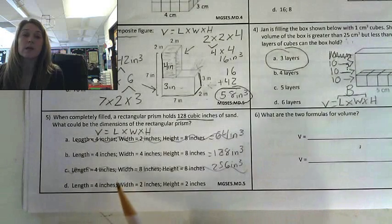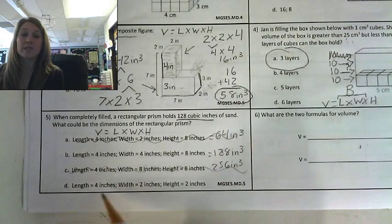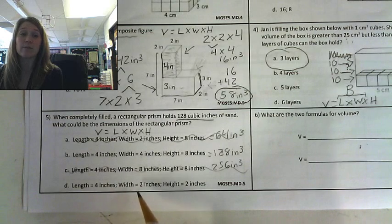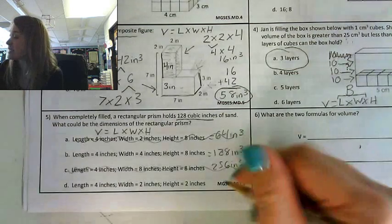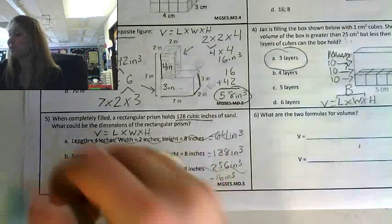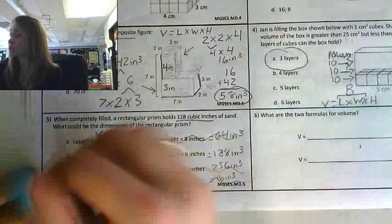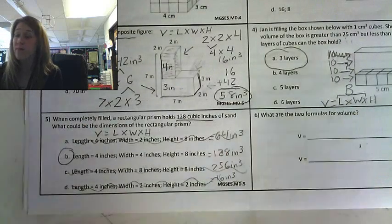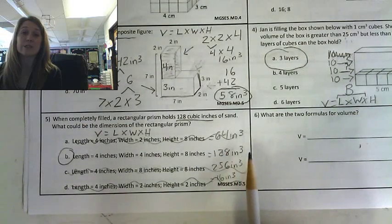And the last one. Length times width is going to give me my base. Four times two is eight. Base times height is going to give me volume. Eight times two is 16. That's 16 inches cubed. Not what I'm looking for. So I was right. And B is my correct answer. It's the only one that gave me 128 inches cubed.